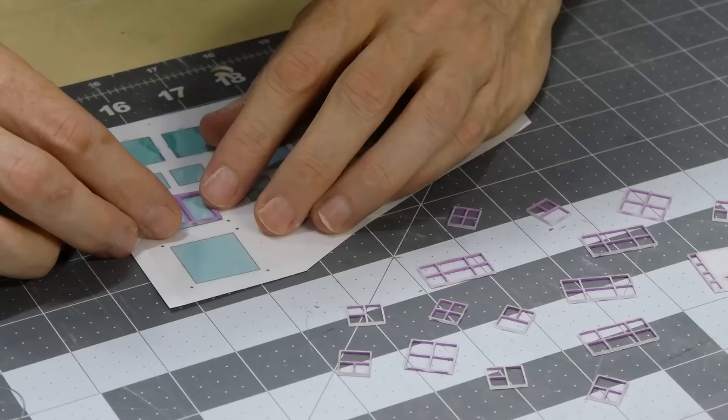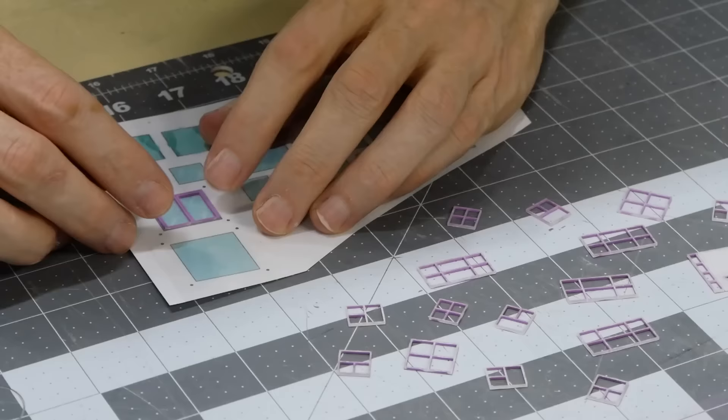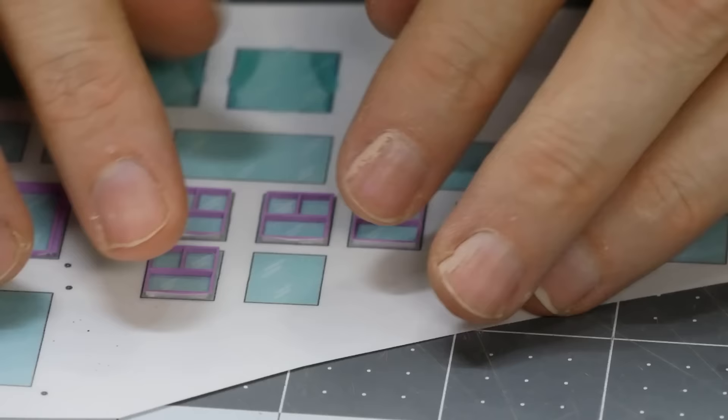Now it's ready to be pressed onto the acetate sheet. I designed it with a little bit of overhang so it doesn't have to fit perfectly. Once aligned, pressing down firmly ensures the liquid PSA gets a good hold.